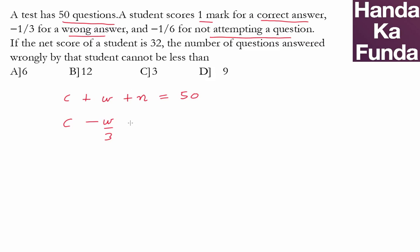The student scored 32. Let me write this equation in a form I'm more comfortable with. Taking the LCM as 6, you'll get 6c - 2w - n = 6 × 32. 30 × 6 is 180 plus 12, which gives me 192. So 6c - 2w - n = 192.